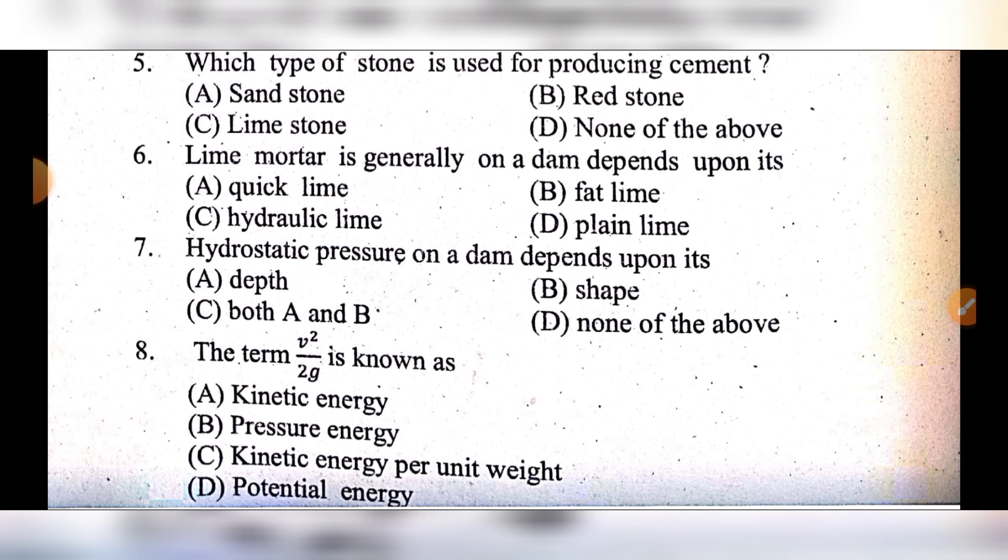Question 8: V²/2g is known as — option A: connecting energy, option B: pressure energy, option C: kinetic energy per unit weight, option D: potential energy. The answer is option C: kinetic energy per unit weight.